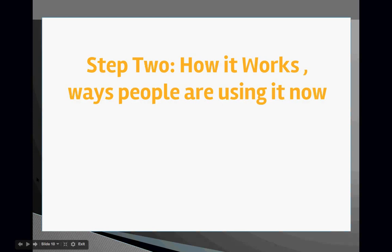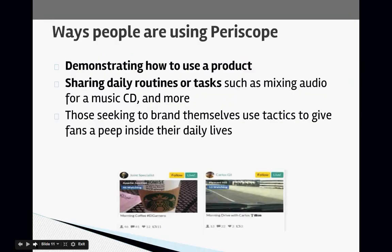Step two: how it works and ways people are using it. You can demonstrate how to use a product. For example, if you're a hair care professional you can demonstrate how to braid, or if you do makeup, you can demonstrate how you do a client's makeup. Another way to use Periscope is sharing your daily routine or tasks such as mixing audio for music. Those seeking to brand themselves use tactics to give fans a peek inside their daily lives.